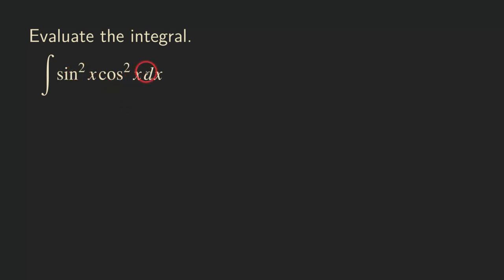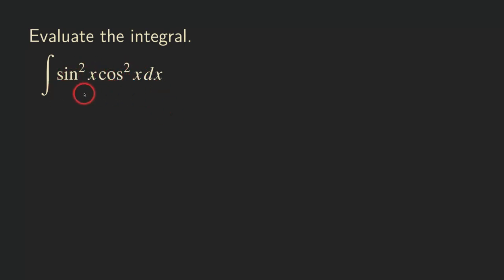If you have an odd power for either sine or cosine, you can reserve a copy, turn it into an even power, and then use the Pythagorean identity to convert one into the other and make a u-substitution. But here we cannot do that because both powers are even — reserving a copy would just produce an odd power, which won't let us use the Pythagorean identity.